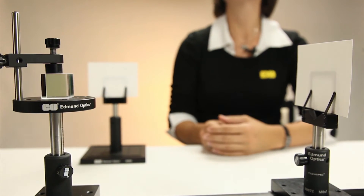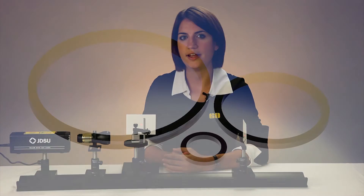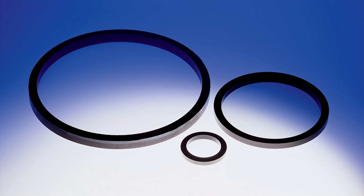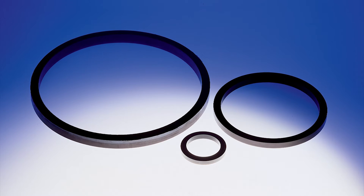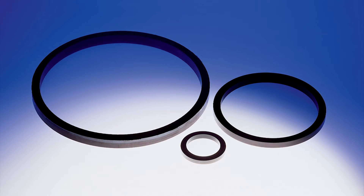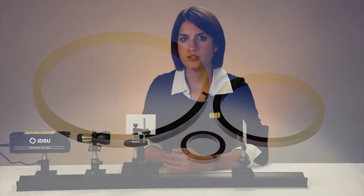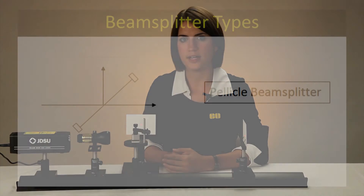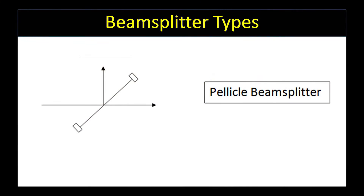Pellicle beam splitters are very thin optical grade film stretched over an aluminum ring and bound in place. They are useful because they have a broad wavelength range of operation, and therefore no chromatic aberration. They have no ghost image because the front and back surfaces have negligible thickness. They are very lightweight and take up little space in optical systems.